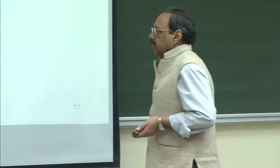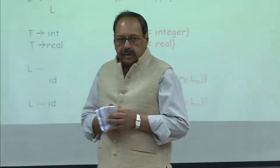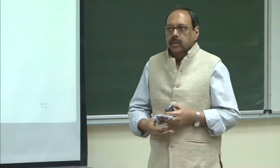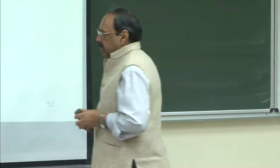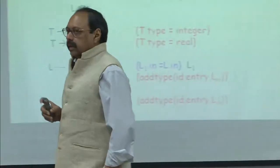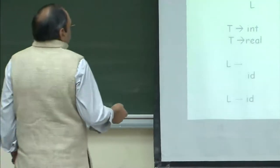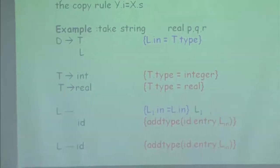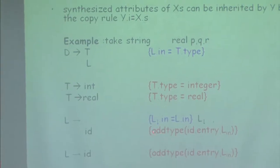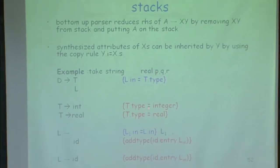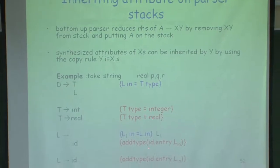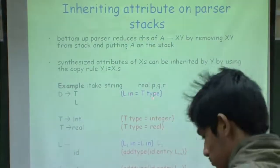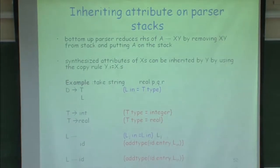Good morning. Let us start our discussion from where we left in the previous class. We started looking at how to inherit attributes of the stack, and we were trying to see that all the rules which are used to copy certain attributes on different parts of the tree could be eliminated by using information on the stack. These two actions which initialize certain attributes and make entries in the symbol table are the only important ones, and if I can eliminate the other rules, we are able to handle the stack.